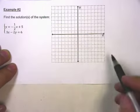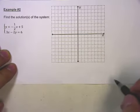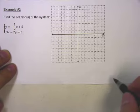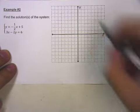So let's do the first equation: y equals negative one-half x plus 5. Well, our y-intercept is going to be 0, 5, which is here.